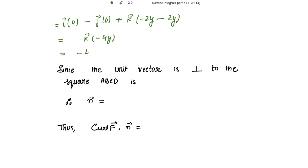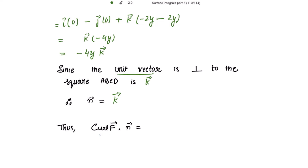Since the square ABCD is in the xy plane, the unit normal vector n perpendicular to the xy plane is along the positive z-axis, so n vector equals k vector. Therefore, curl F dot n equals minus 4y k vector dot k vector, which equals minus 4y. Now taking the surface integral of this dot product, ds becomes dx dy.